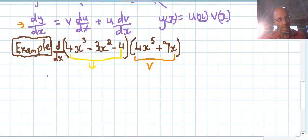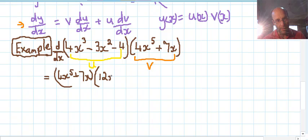So the derivative equals v. We just write v down, so that part there, 4x to the fifth plus 7x. Keep the brackets there. And the derivative of the first with regards to x, so that's the derivative of the yellow one. We again put that in brackets to group it, so that'd be 12x squared minus 6x.